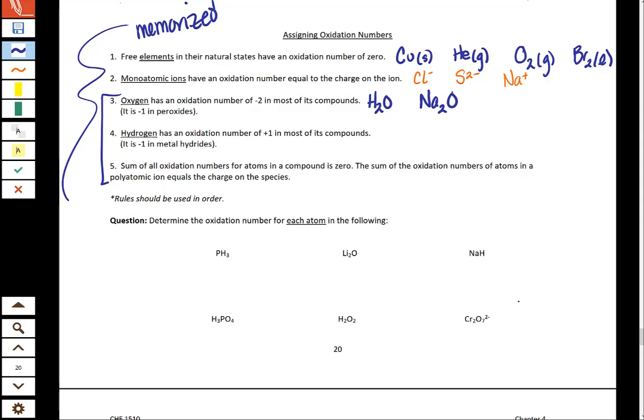So of course there's exceptions to this, which is terrible, but it happens. Peroxides are things where you have an oxygen-oxygen bond. One of the most common ones is hydrogen peroxide. So here oxygen would be a minus one.